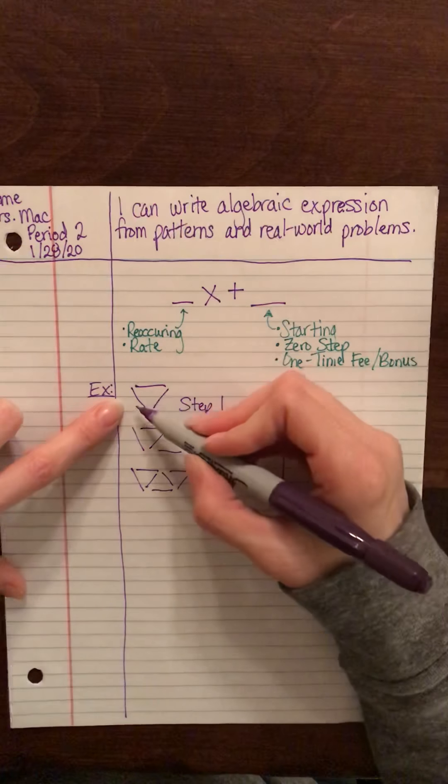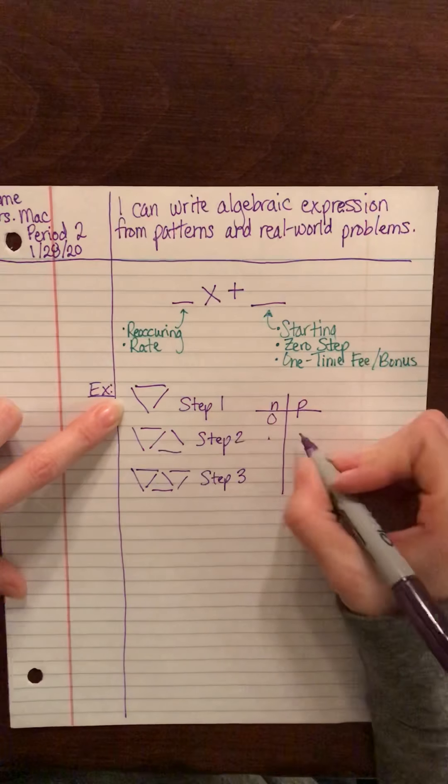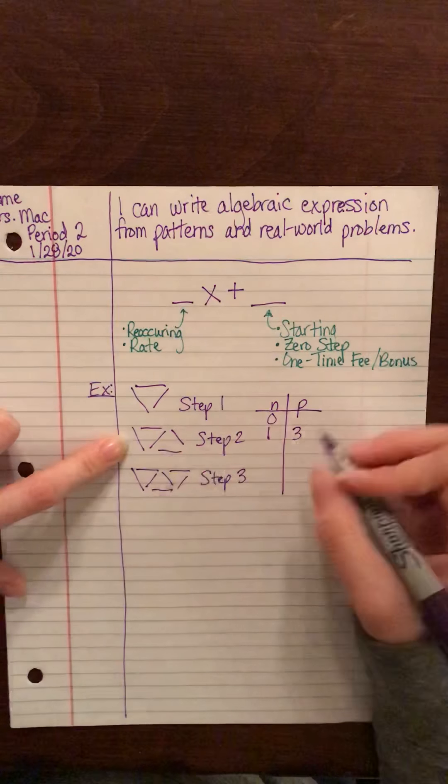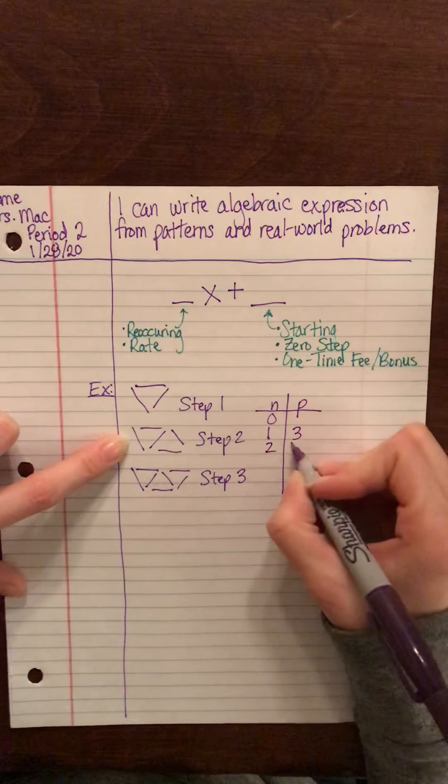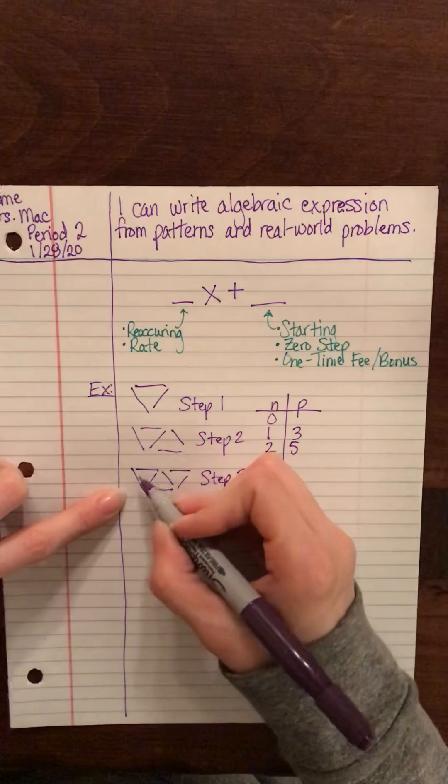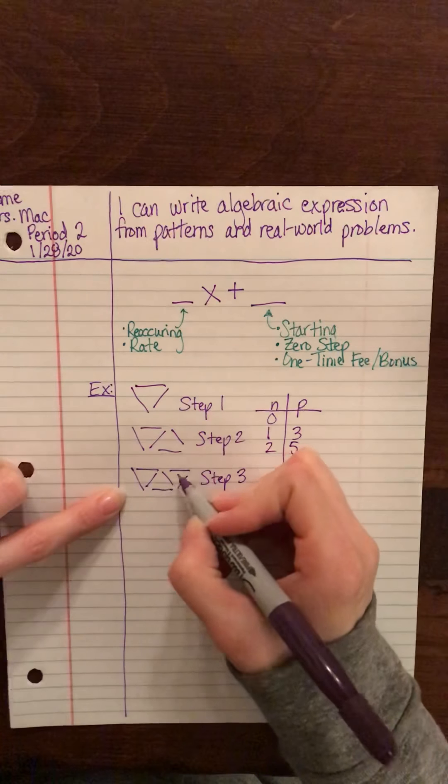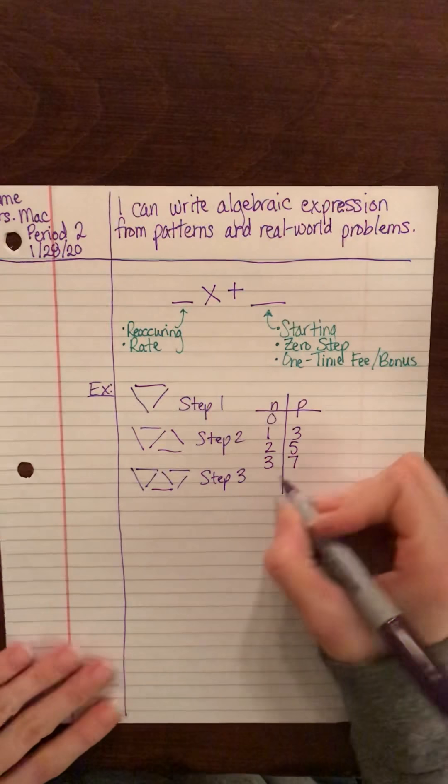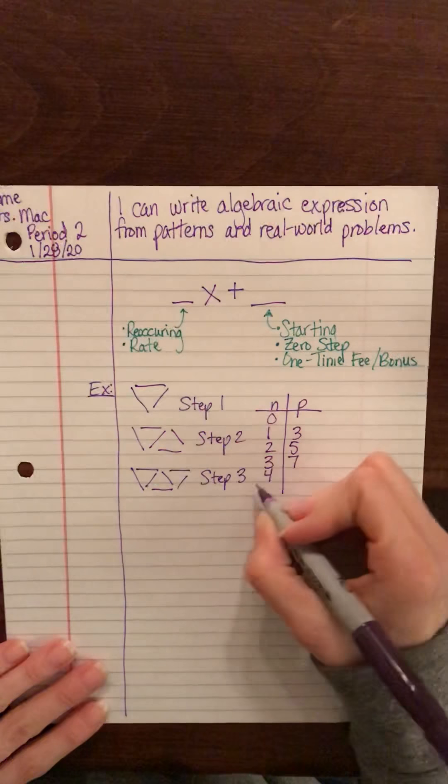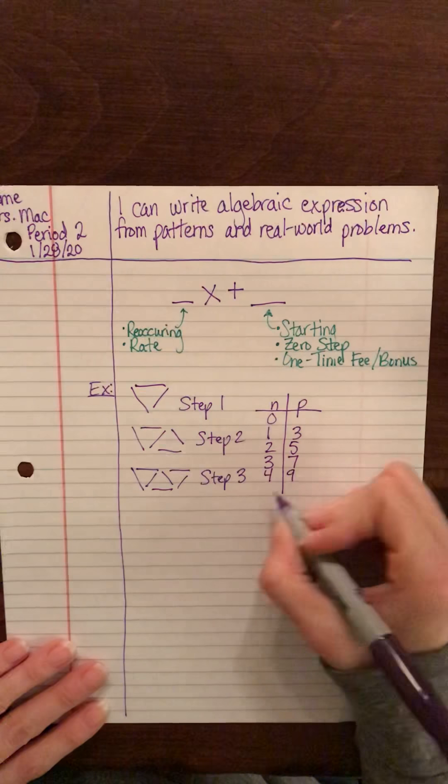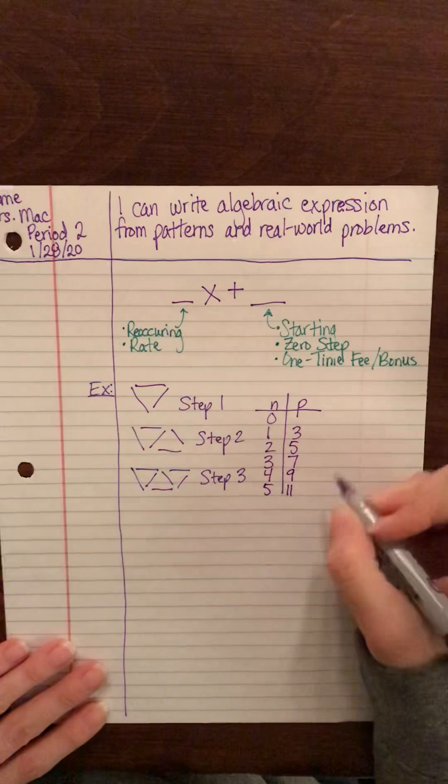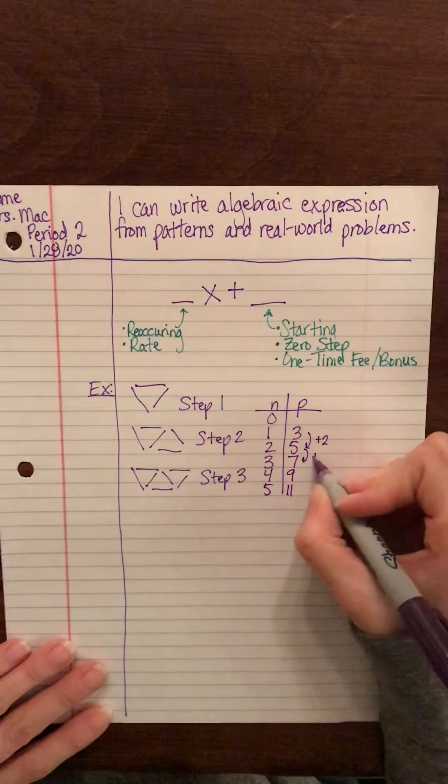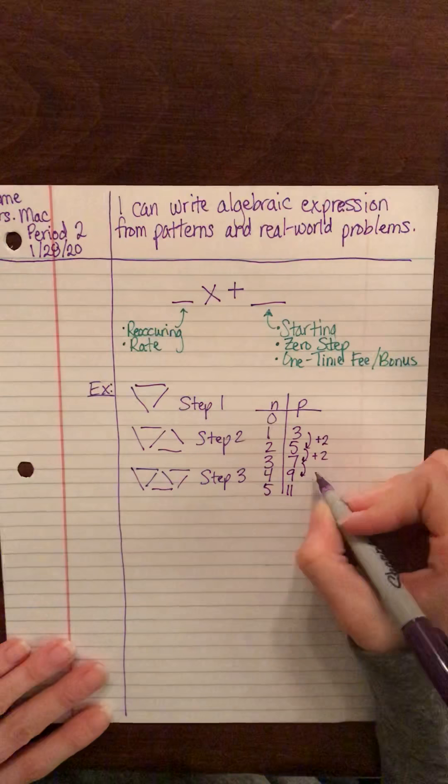For step one you can see that we have three toothpicks. For step two we have five toothpicks. Step three we have seven toothpicks. And if we were to continue this pattern, at step four we would have nine, and step five we would have eleven. So you can see that you're adding two each time you go from one step to another.